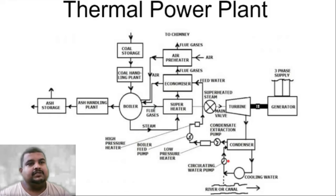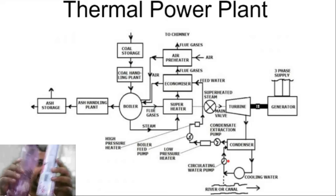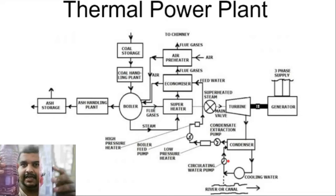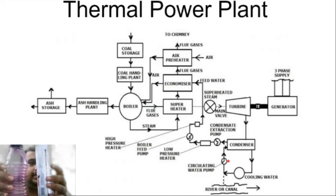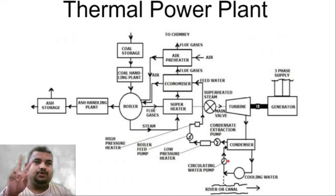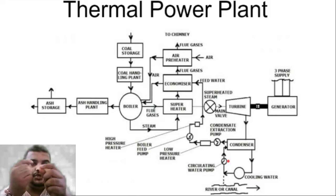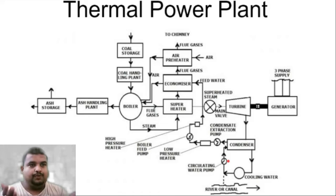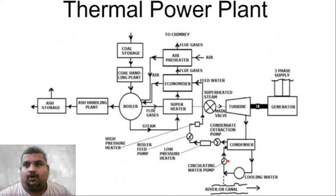The condenser works on the same principle as a heat exchanger. A heat exchanger transfers heat between two fluids without them touching each other — using tubes, for example a big tube and a small tube, one inside the other, each carrying a different fluid. In the condenser, one fluid is the low pressure steam and the other is cooling water. The cooling water cools the steam.